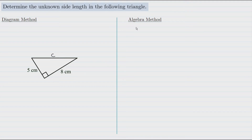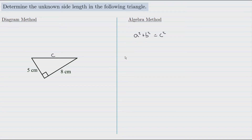The Pythagorean theorem states that a squared plus b squared equals c squared, and c is the hypotenuse. That's why I recommended calling this c. So we can fill in values for a and b — it doesn't matter which one you call a and which one you call b. Let's call this 5 as a and 8 as b, so we have 5 squared plus 8 squared equals c squared.